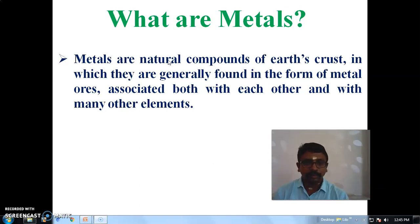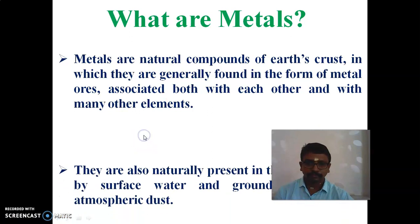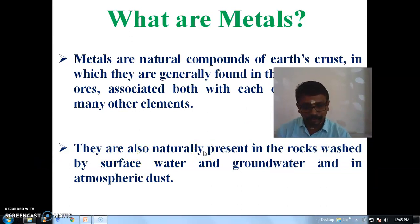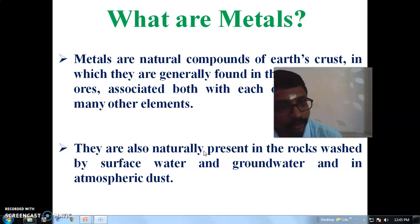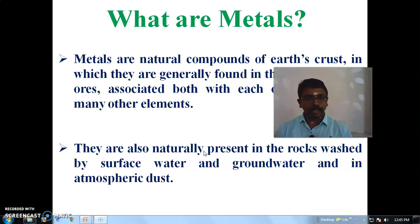In the earth's crust, some metals are associated with the form of ore. From that ore, we have to extract — that is, separate — the metals. Metals are also naturally present in rocks washed by surface water and groundwater, and in atmospheric dust. So from rocks, metals can be obtained.